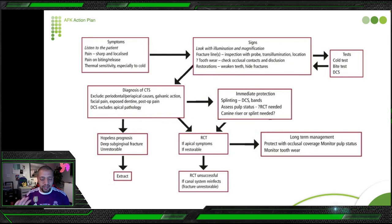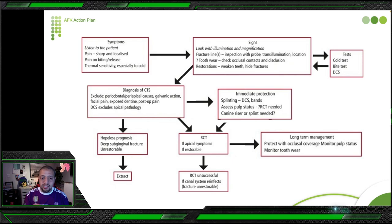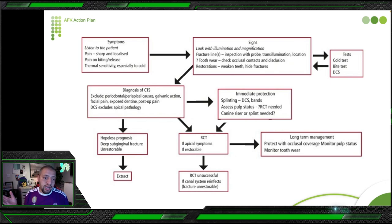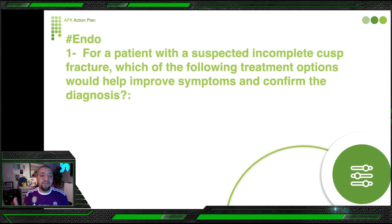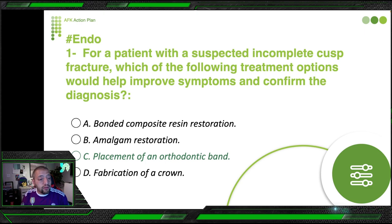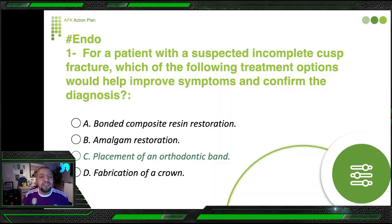Sometimes the splinting method uses composite placed all around the tooth, out of occlusion, to let the patient go home. When the patient comes back, if they say 'it's okay, I feel no pain,' you assess whether root canal treatment is needed or not. The most important step: protect with occlusal coverage to make sure the fracture is contained. So in this question, to confirm diagnosis, the answer is placement of orthodontic bands. I hope this is clear — this concept is not very common, but when you see a question about it, feel happy, because not everyone can solve it.